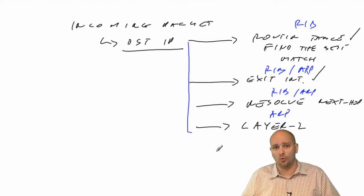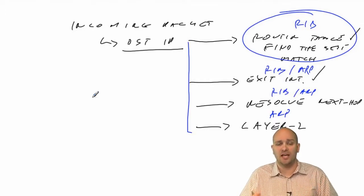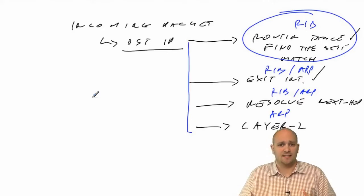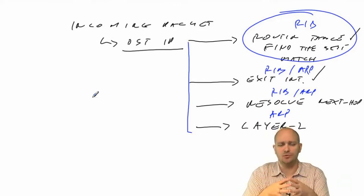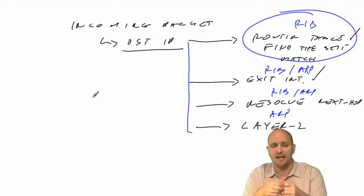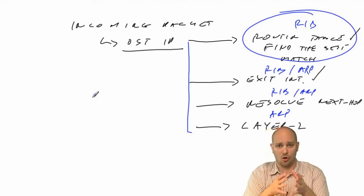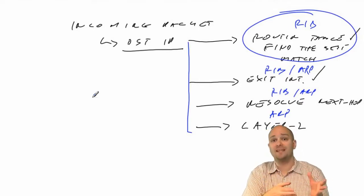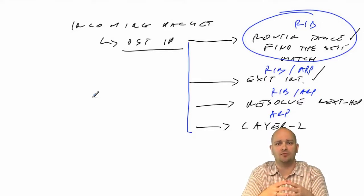Cisco recognized this was not an efficient process and tried to address it using different historical solutions. One solution was net flow switching, where only the first packet in a flow would be sent towards the routing engine. Based on the routing decision for that first packet, they would program the layer 2 databases on the switch so subsequent packets in that flow could be switched the same way. But this was terribly inefficient for high traffic rates.